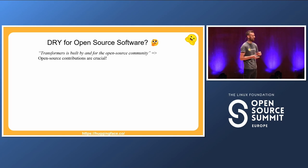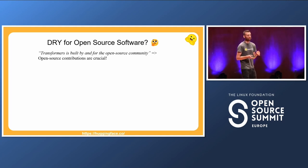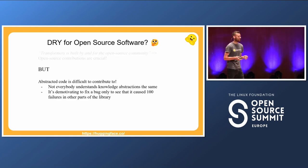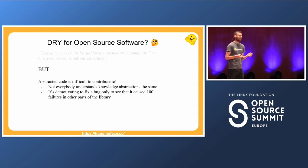What about DRY for open source software? Open source software, especially for us, means it's built by and for the open source community, so open source contributions are crucial. We rely on open source contributors — we cannot keep up with all the new things popping up in machine learning. The problem with DRY is that when you've written a lot of abstractions, it's extremely difficult to contribute. If you want to contribute a small thing, you still need to understand most of the abstractions, and in machine learning, abstractions are very difficult to understand and can be very ambiguous.